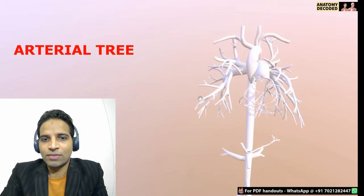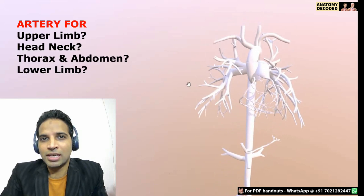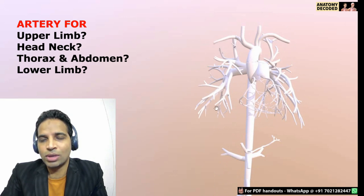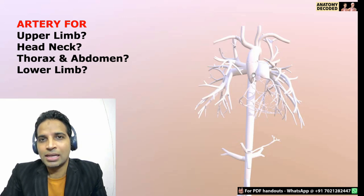We will look at which arteries supply the upper limb, which artery supplies the head and neck region, which artery supplies the thorax and the abdomen, and which artery continues down into the lower limb. We will trace each of the arteries from the heart to get a brief overview of the major arteries supplying the body.